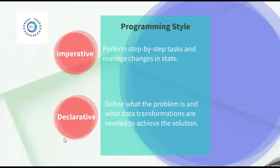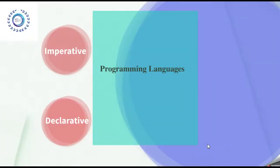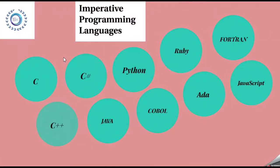Now let us see which programming languages come under imperative programming paradigm and which come under declarative programming paradigm. For imperative programming languages, you can see: C, C sharp, Python, Ruby, Fortran, C++, Java, COBOL, ADA, and JavaScript. These programming languages are coming under the category of imperative programming paradigms.